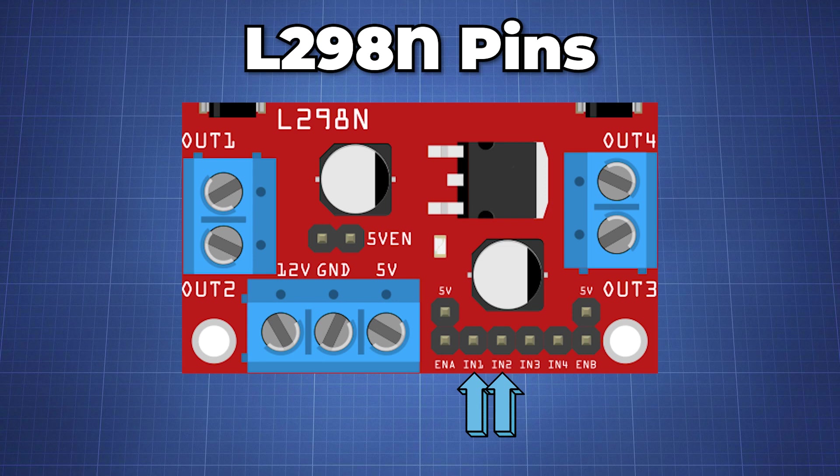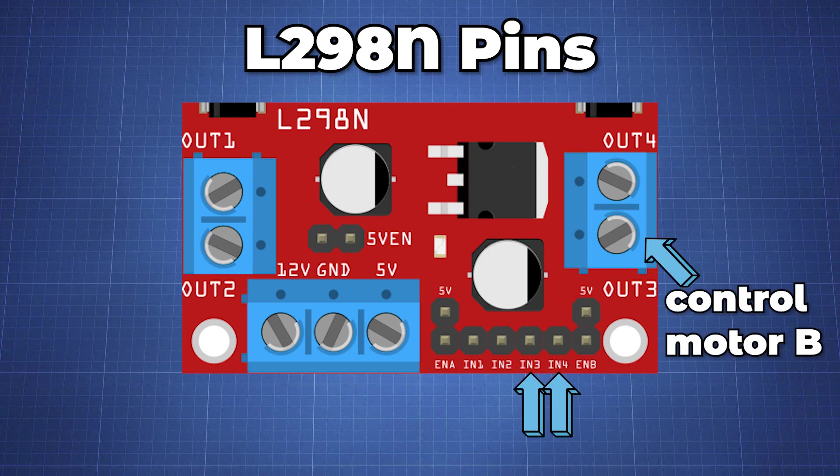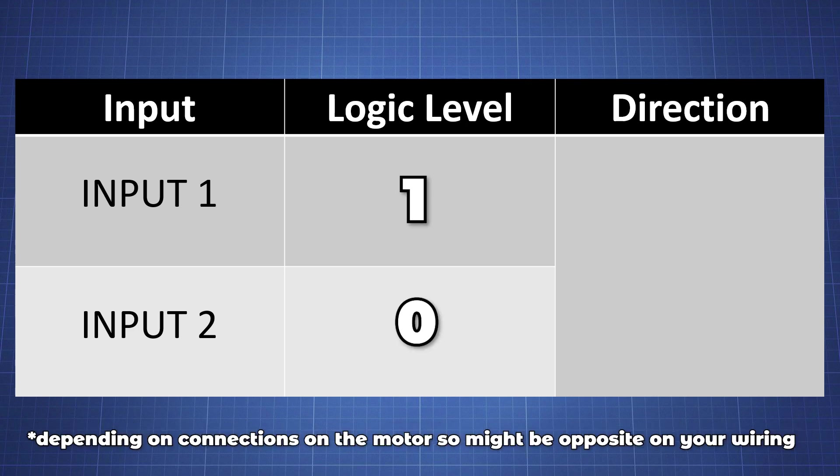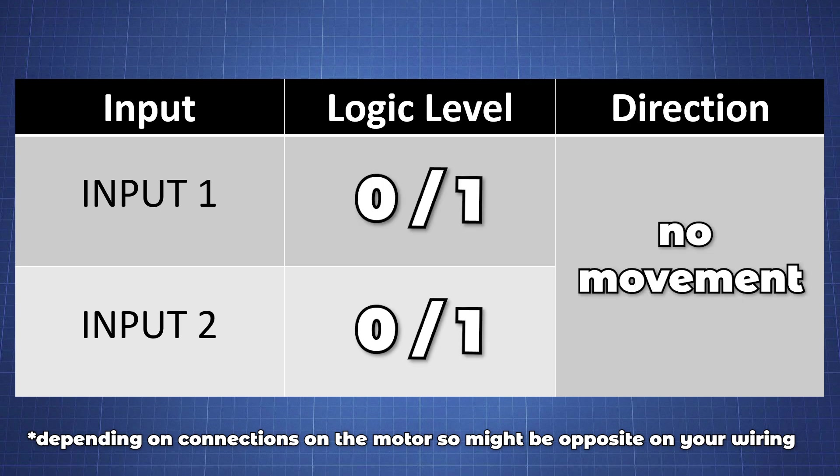Next, the input 1 and 2 pins are used for controlling the rotation direction of motor A and the inputs 3 and 4 for motor B. If input 1 is low and input 2 is high the motor will move forward. If input 1 is high and input 2 is low the motor will move backwards. In case both inputs are the same either low or high the motor will stop. The same applies for inputs 3 and 4 to control motor B.